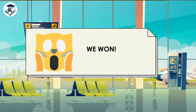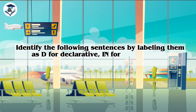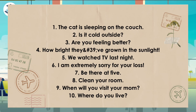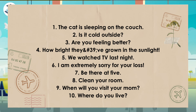Did you enjoy traveling with English 7 Airlines? Now, let us see if you can answer the following learning task. Ready your pen and paper. Identify the following sentences by labeling them as D for declarative, IN for interrogative, IM for imperative, and E for exclamatory. Number one: the cat is sleeping on the couch. Number two: is it cold outside? Number three: are you feeling better? Number four: how bright they've grown in the sunlight. Number five: you watched TV last night. Number six: I am extremely sorry for your loss. Number seven: be there at five. Number eight: clean your room. Number nine: when will you visit your mom? Number ten: where do you live?